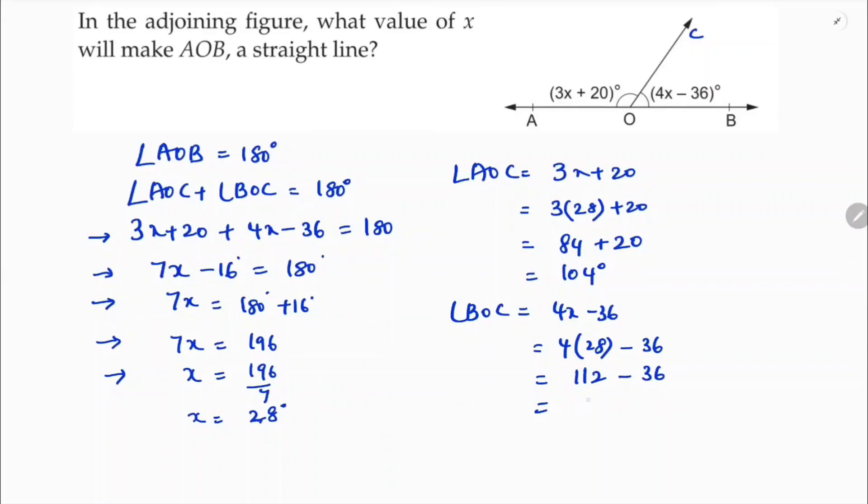112 minus 36 is 76 degrees. Now if you want, you can check: AOC plus BOC, AOC is 104, BOC is 76, so both add up to 180 degrees. So for the value of x equals 28 degrees, AOB will be a straight line.